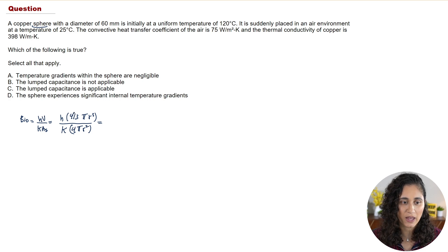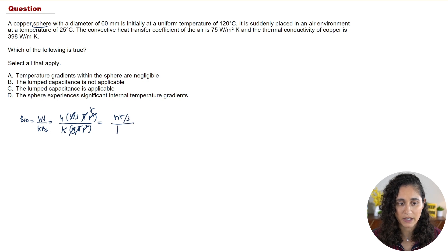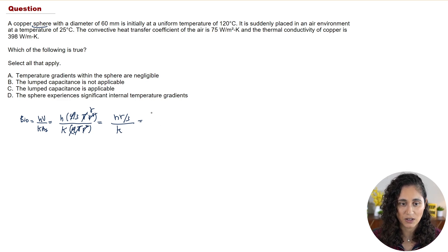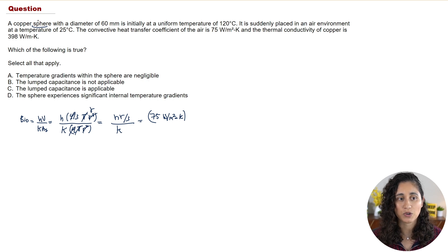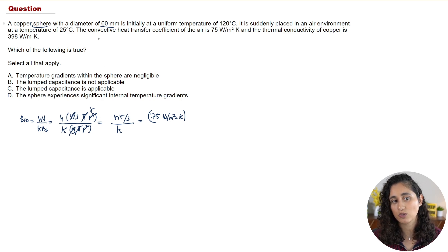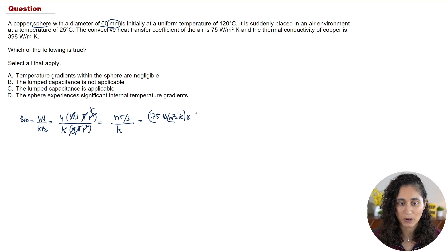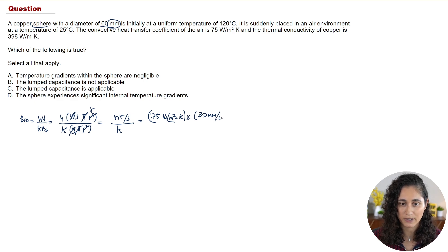We can simplify the equation before plugging in numbers. The 4, pi, and powers of r simplify so that we're left with: Bi = (h × r) / (3 × k). Now plugging in: h is the convective heat transfer coefficient, 75 W/m²·K. The diameter is 60 mm, so the radius is 30 mm, which we convert to meters by dividing by 1000, giving 0.03 m. k for copper is 398 W/m·K.